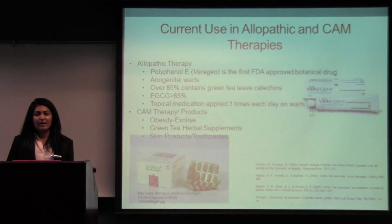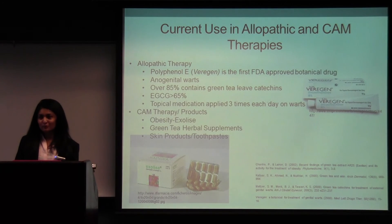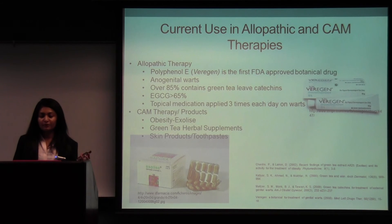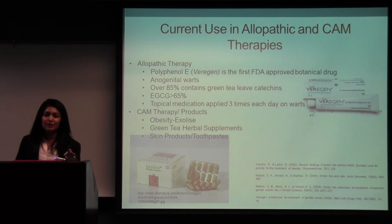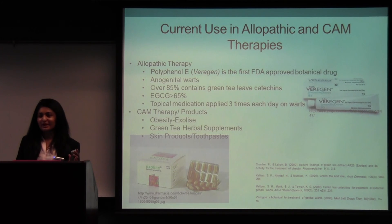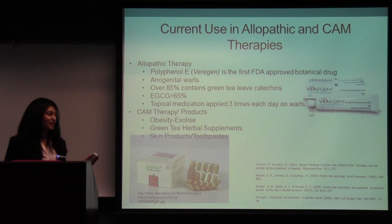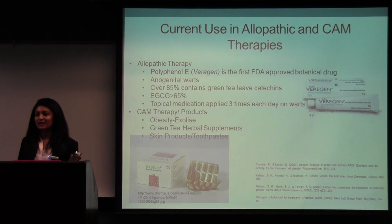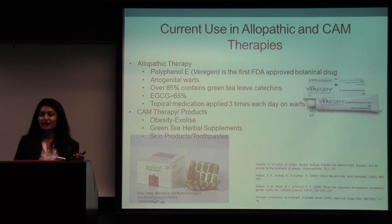Some current uses in allopathic and CAM therapies: the first FDA-approved botanical drug, known as Polyphenon E or Veregen, was derived from this plant and is used to treat anogenital warts. It's a topical medication applied three times daily to the site and cannot be applied for more than 16 weeks; over 65% of it is derived from EGCG. There are also many products on the market in herbal supplements containing green tea, including products for obesity, as well as skin products from companies like Estée Lauder and L'Oréal, toothpaste, and hair shampoos and conditioners.